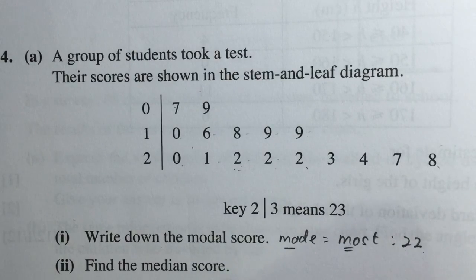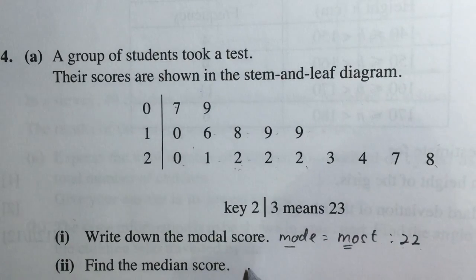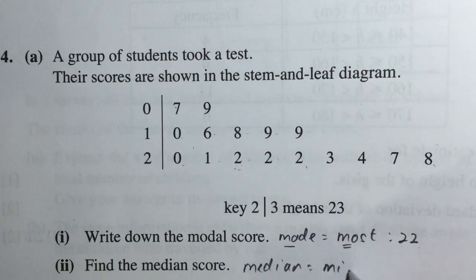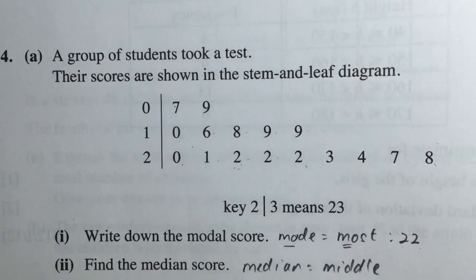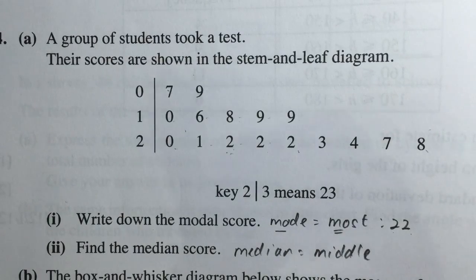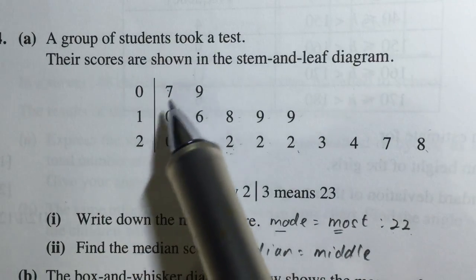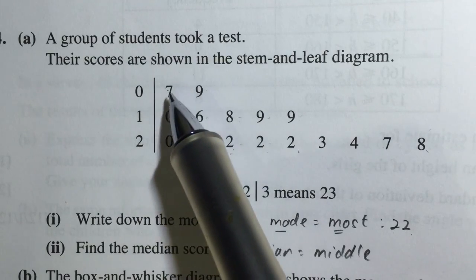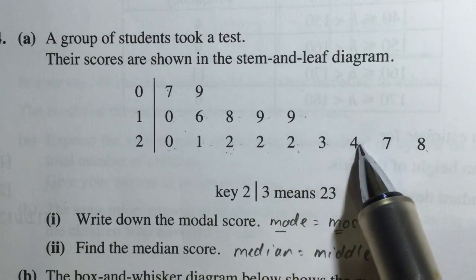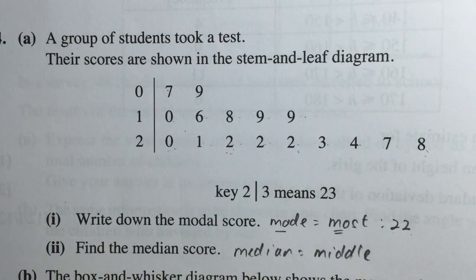Now to find the median score, median actually sounds like middle. So in other words we are looking for the middle value. Now let's count how many pieces of data do we have. So we have 1, 2, 3, 4, 5, 6, 7, 8, 9, 10, 11, 12, 13, 14, 15, 16. Now 16 is an even number and we are trying to find the middle number.